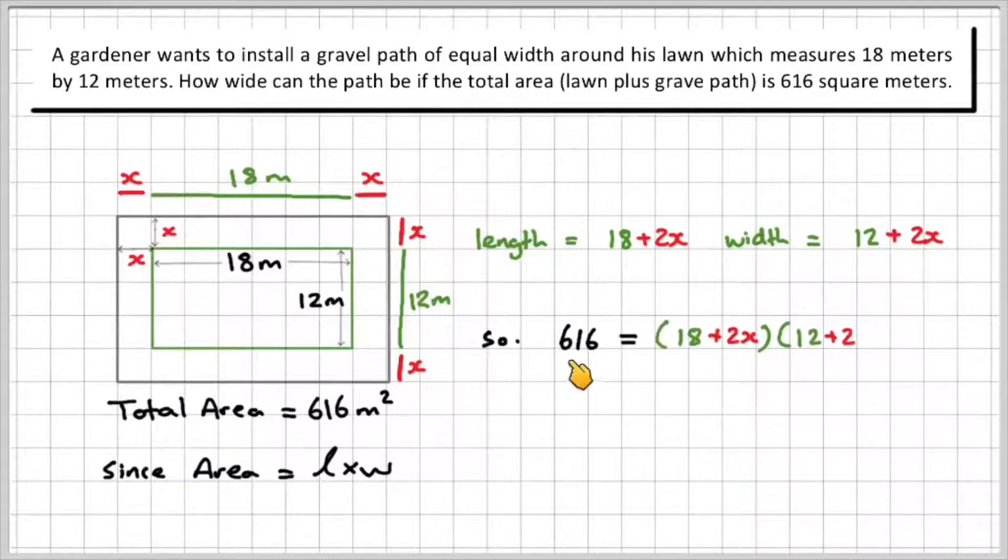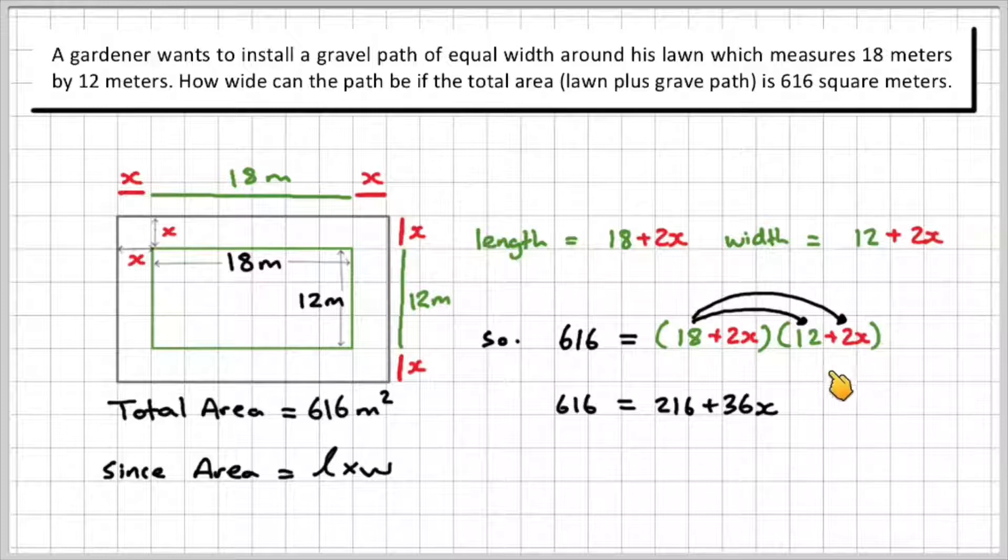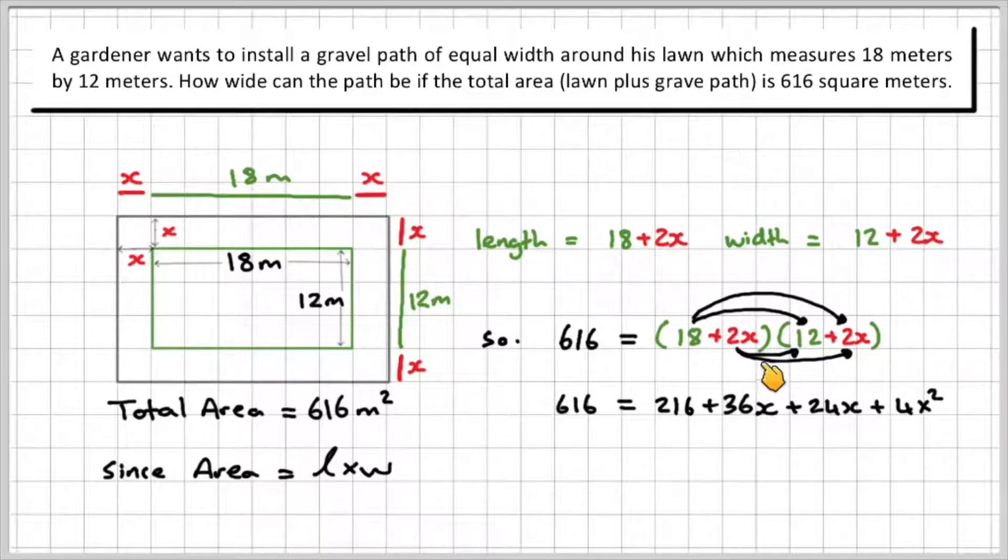Now I know that the area is equal to length times width. Since my length is 18 plus 2X and my width is 12 plus 2X, I can multiply those together. So step one is to expand. 616 is equal to 18 times 12, 216. 18 times 2X, which is plus 36X. 2X times 12, which is plus 24X, and then 2X times 2X, which is plus 4X squared.